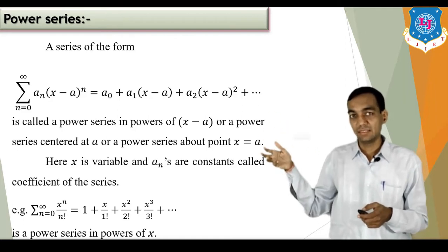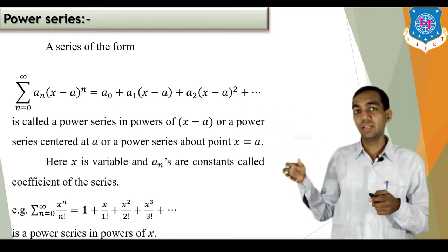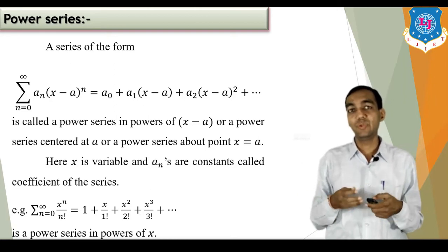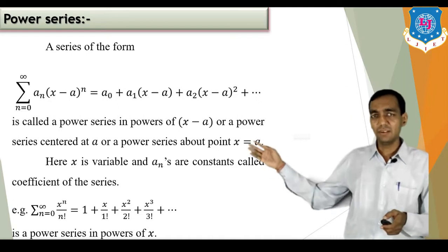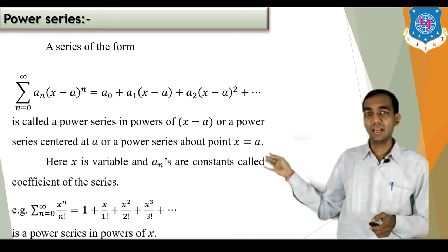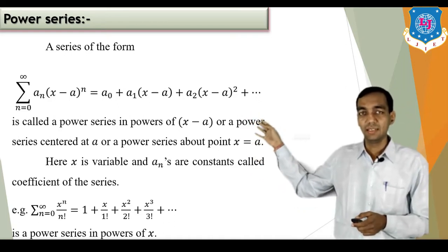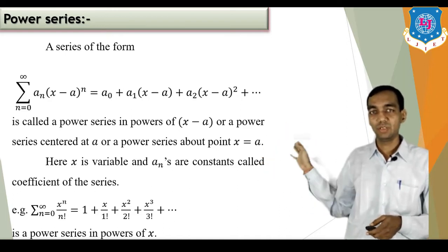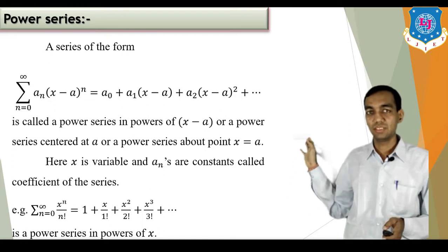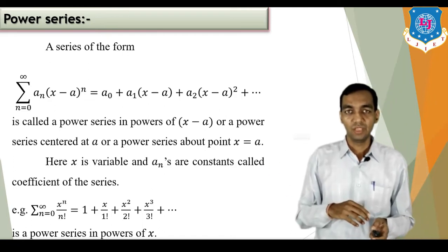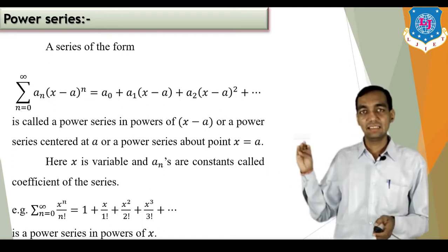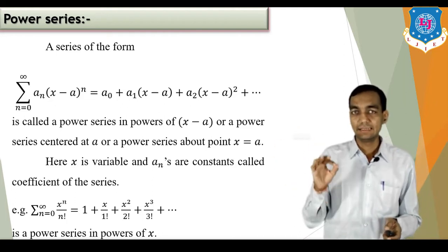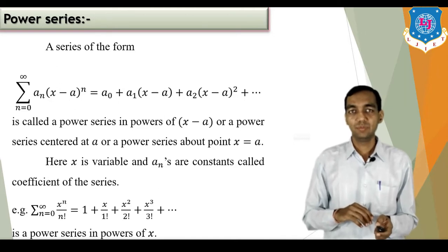Since x is a variable, the convergence depends on the values of x. For different values of x the series is either convergent or divergent. One simple example: sigma x^n/n! = 1 + x/1! + x²/2! + x³/3! + ... and so on. This is a series in powers of x, meaning the center of the series is a = 0.